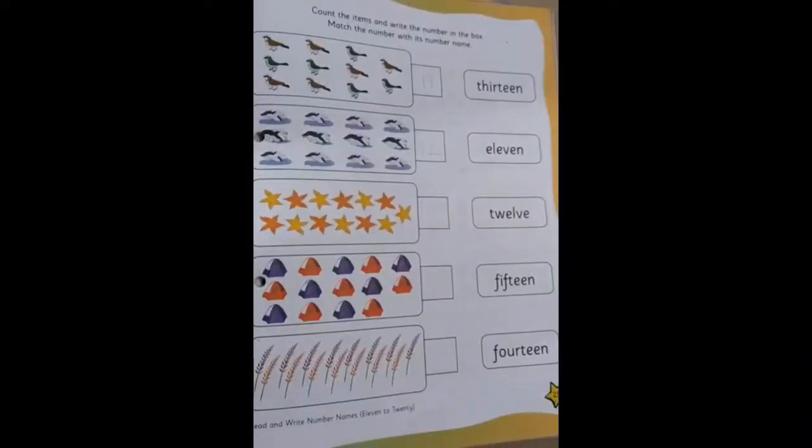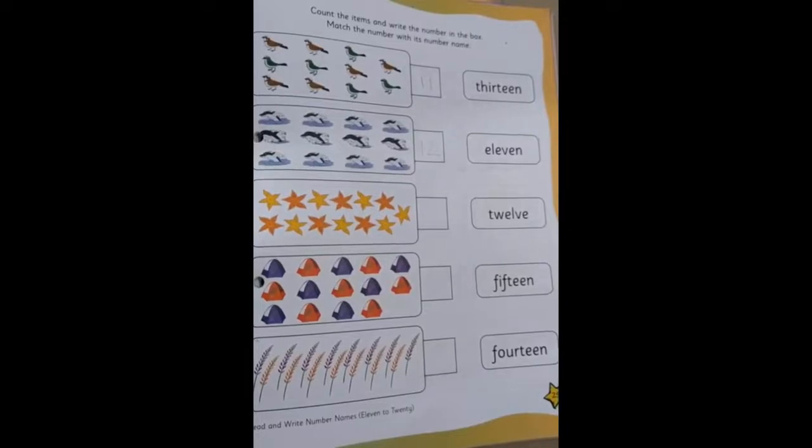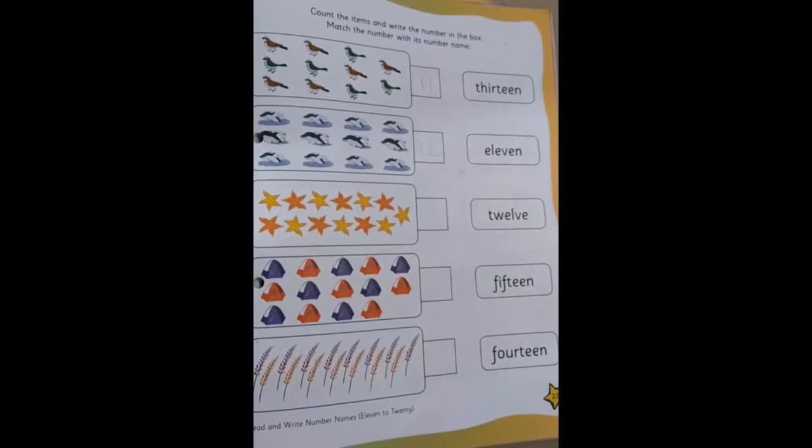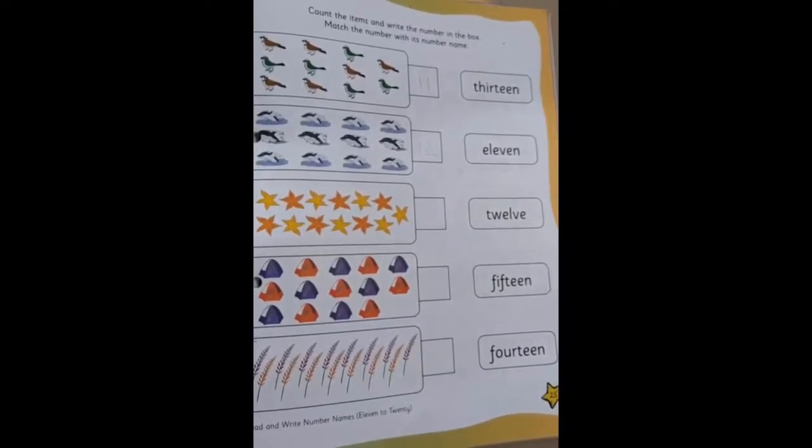Now we are going to do number names part 2. So children, let's open our pencil time mathematics to page 25. What do we have to do? Count the items and write the number in the box, and then match the number with the number names.